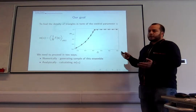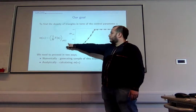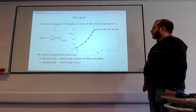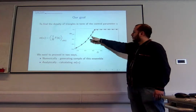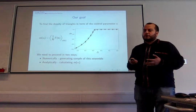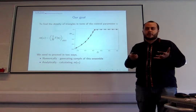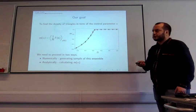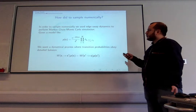Our goals are: first, write down a formula for the expected number of triangles as a function of our parameters; and second, develop a way of sampling these graphs numerically to generate them. The sampling problem is also a really interesting one, so I'll start by discussing that first.